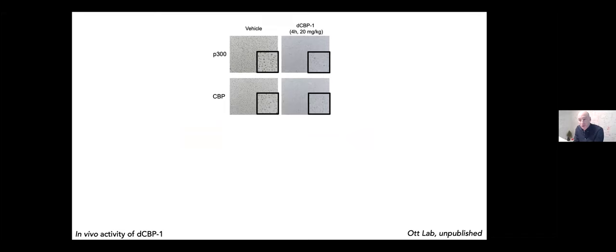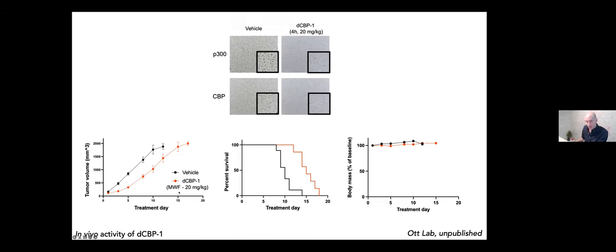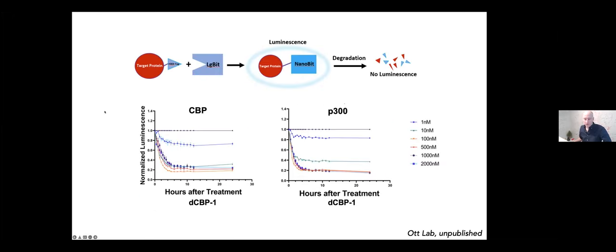This molecule is active in vivo. I regret that this didn't make it into our initial publication, but we can see clearly in vivo effects of dCBP-1 treatment here in a subcutaneous model of MM1S, a multiple myeloma cell line grown subcutaneously. This is four hours of treatment following a single dose at 20 mg per kg and you can see really by IHC almost complete loss of both CBP and p300. This is a dose that can be well tolerated when given three times weekly, so we can see a reduction in tumor proliferation when grown subcutaneously and extension of overall survival in this cohort of mice with really minimal effects on body weight.